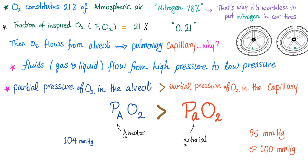Oxygen constitutes 21% of the atmospheric air — the fraction of oxygen in the atmospheric air is 21%. Oxygen goes to the alveoli, then the pulmonary capillary, because it moves from high pressure to low pressure. Partial pressure of oxygen in the alveoli is PAO2, around 104–105. Partial pressure of oxygen in the capillary — the arterial blood — is PaO2, around 95–100. That's why there is an A-a gradient, as we've discussed. If you don't know what the A-a gradient is, please watch my previous video on the A-a gradient.